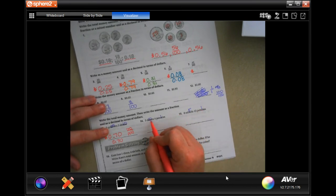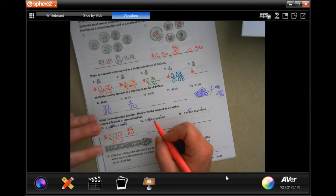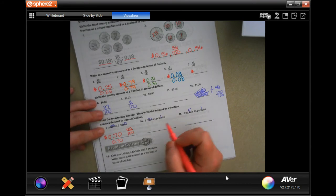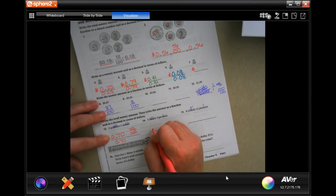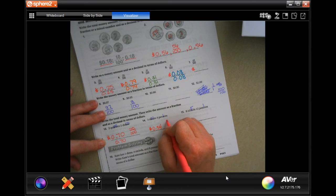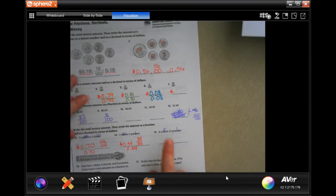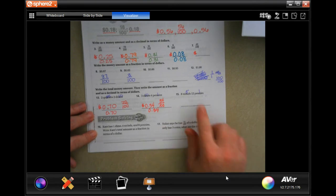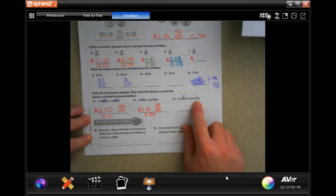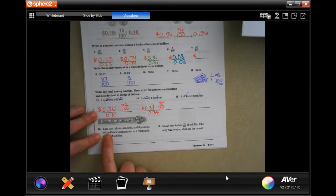So, three dimes. That's 30 cents because that's three sets of 10 and four pennies. So, 34. So, dollar sign, 0.34. As a fraction, 34 out of 100 cents. And as a decimal, 0.34. You guys do number 15. You totally can. Nickels are worth five. Five pennies are worth one.